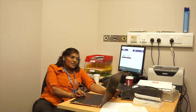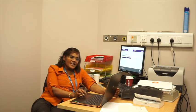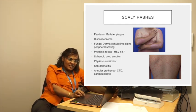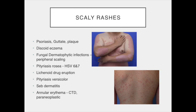Any rash is worth a close examination to observe for scaly lesions, as this separates them into a distinct type of dermatological disease. This can be psoriasis of different types like guttate or plaque psoriasis, or discoid eczema which is quite hyperkeratotic. It can help differentiate a fungal dermatosis with different types of peripheral scales, and pityriasis rosea, in which you see a herald patch in the beginning followed by a Christmas tree pattern of rashes which are very itchy. Other rashes that can be scaly include lichenoid drug eruptions, lichen planus, and annular erythema from paraneoplastic origin.